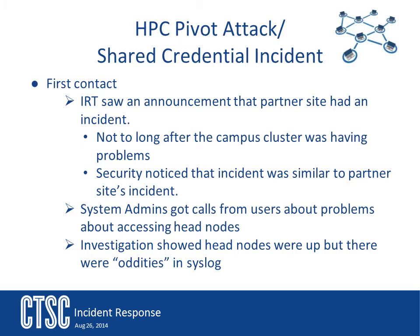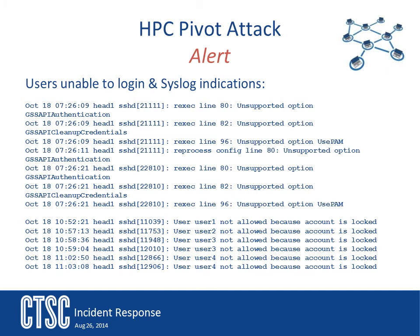This escalated to more and more users notifying the help desk that they were unable to access the system. The admins began to look at things on the system and started looking through the syslog. In the log file, they noticed a lot of weird things — a large volume of errors they had never seen before. The head node for this cluster uses Kerberos for authentication, but suddenly the SSH binary was saying it did not have that option for Kerberos authentication. When that doesn't work, SSH defaults to locking the account out.